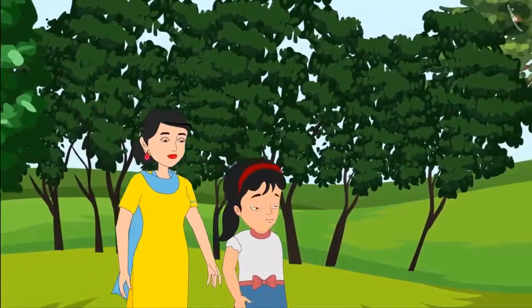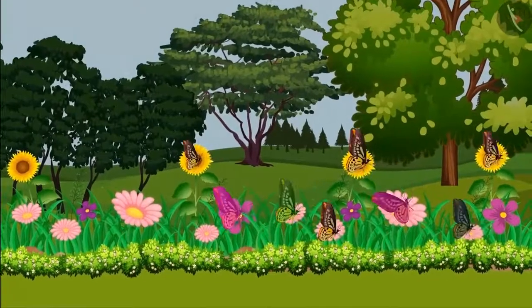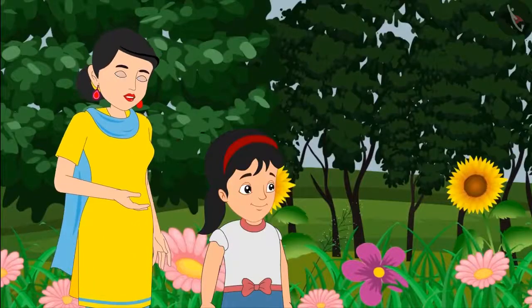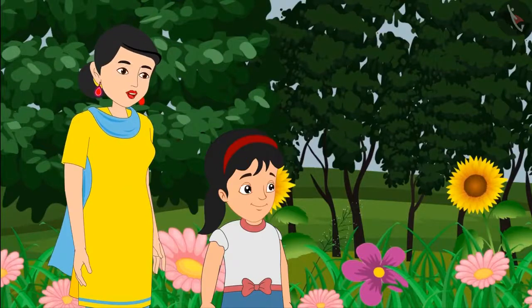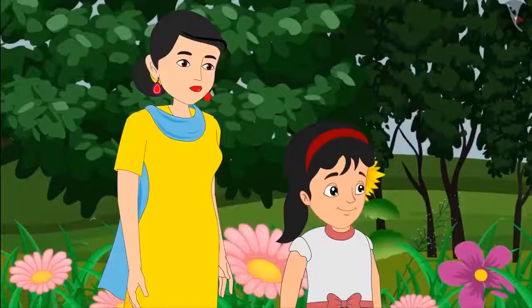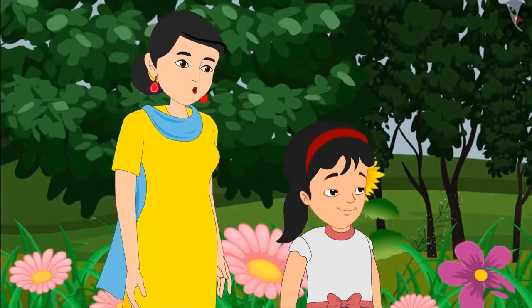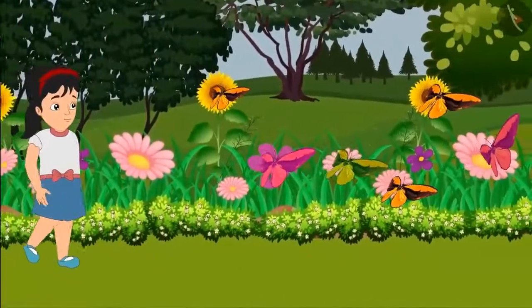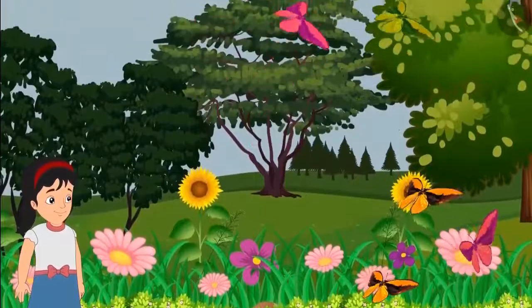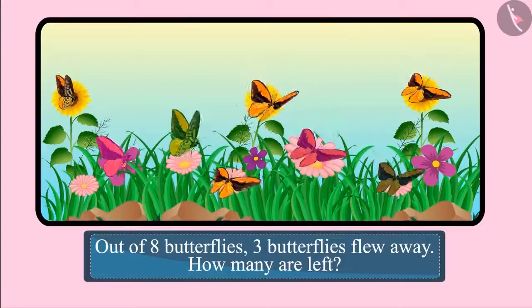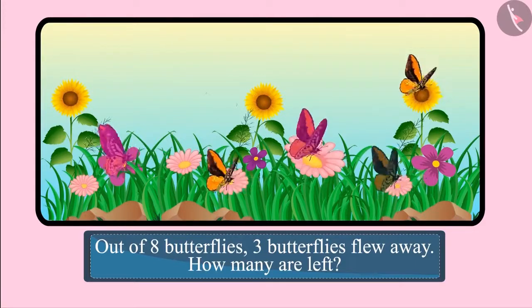Pinky is strolling in the garden with her mother. She sees some butterflies on a bunch of flowers. Pinky goes a little closer to the flowers to see the butterflies more closely, and three butterflies fly away. Oh-ho! Three butterflies flew away. Out of eight butterflies, three butterflies flew away. So how many butterflies are left on the flower?